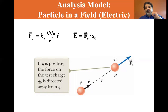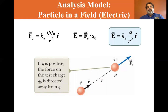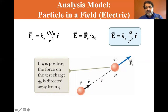The electric field E is equal to the electric force divided by the test charge q₀. So E equals k_e · q / r², directed along the unit vector r̂. Note that q here is not the test charge — it is the source charge.